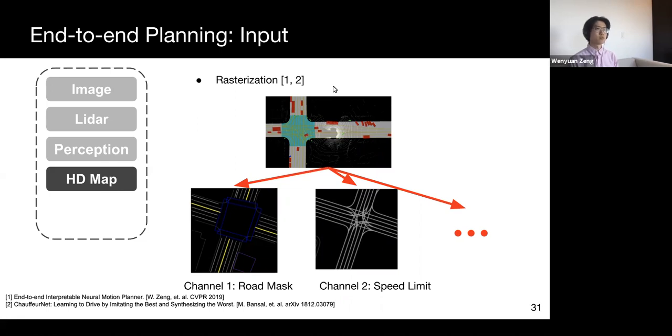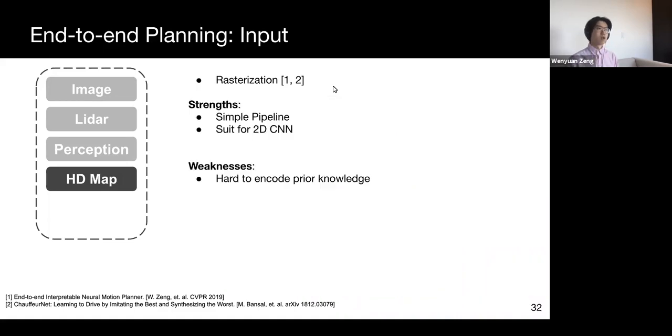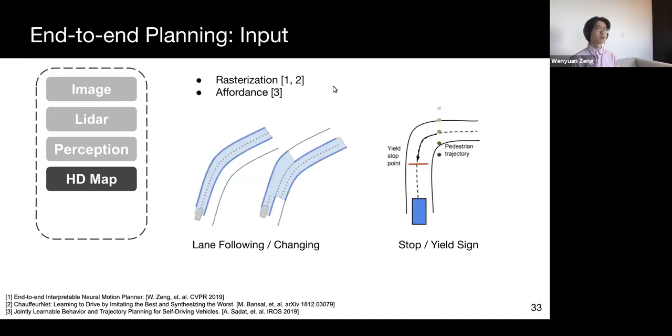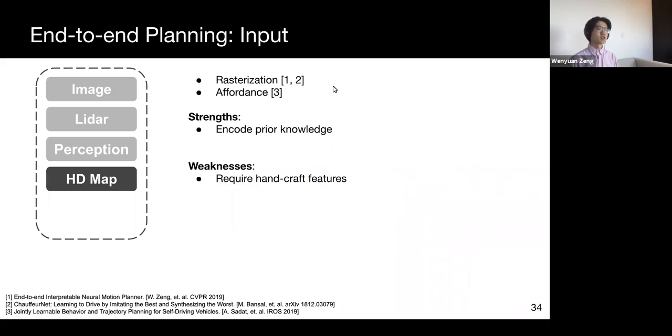As shown here, we can rasterize different semantic information, such as road masks or speed limits, into different channels. The main drawback of this representation is the difficulty of encoding prior knowledge. For example, even if we can encode the speed limit into a channel, it's not clear how we can enforce the model to understand and follow these constraints. We can also more explicitly use map information by first evaluating the distance from the ego car trajectory to a targeted centerline or to a stop sign, etc., and then feed them to the model. In this format, it's much easier to encode any prior knowledge we have, but on the other hand, this requires us to design handcrafted features such as distance to a centerline, which might limit the performance of the overall model.